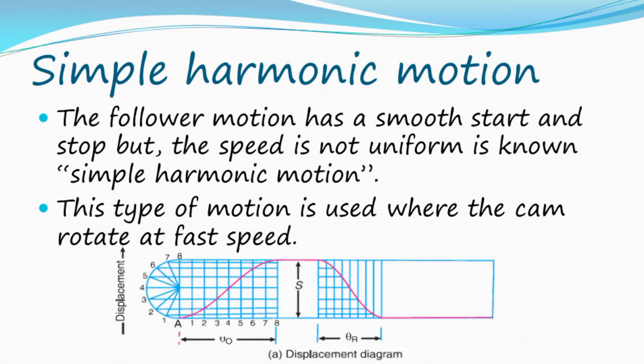Simple harmonic motion: The follower motion has a smooth start and stop, but the speed is not uniform. This type of motion is used where the cam rotates at fast speed.